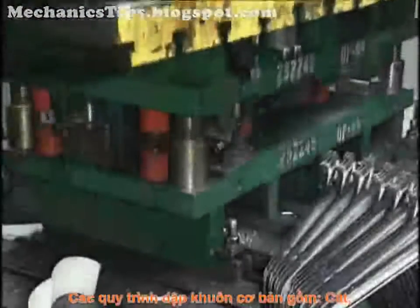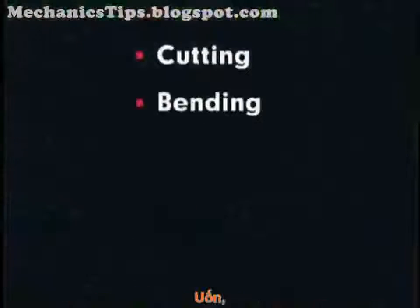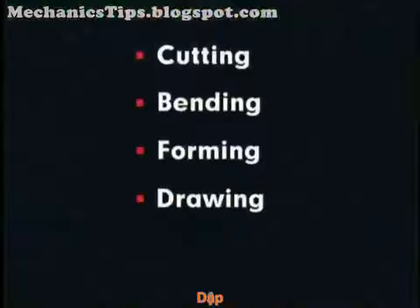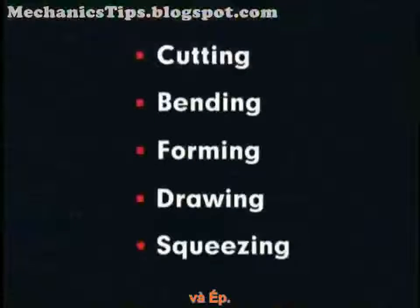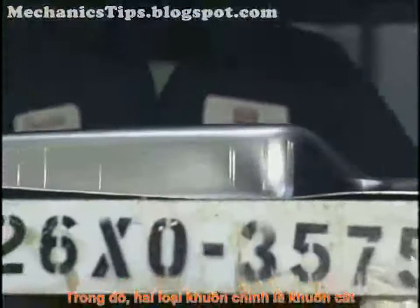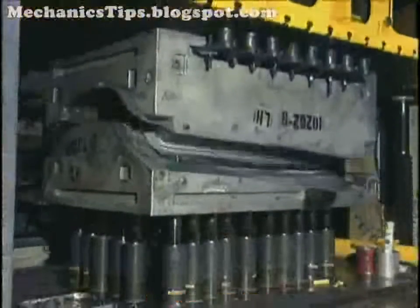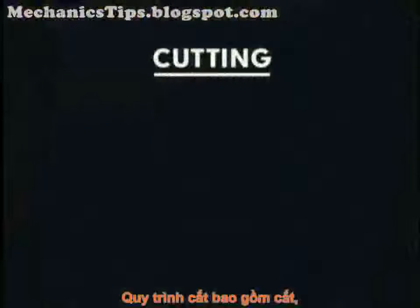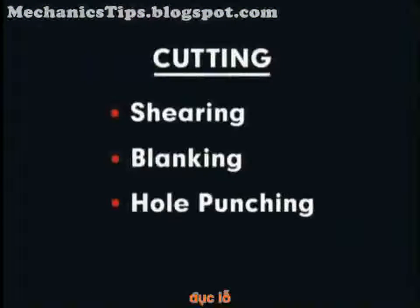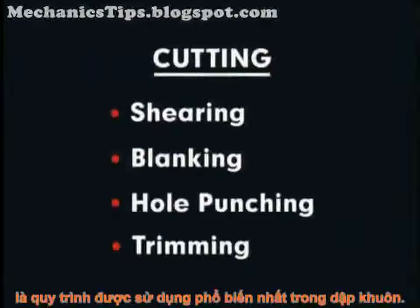Basic die operations include cutting, bending, forming, drawing, and squeezing. The two most common types of dies, however, are cutting dies and forming dies. Cutting, which includes shearing, blanking, hole punching, and trimming, is the most common press working operation using dies.